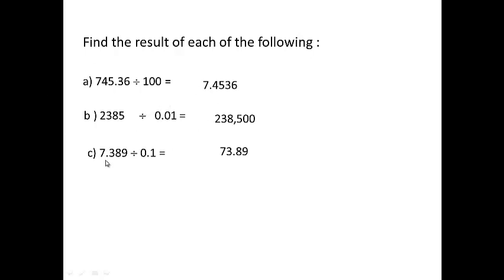Third problem: divide by 0.1, which also converts into multiplication. Move the decimal point to the right according to how many digits are in front of the decimal — one digit, so move one step to the right. Taking the point with us from here to here, the answer is 73.89.